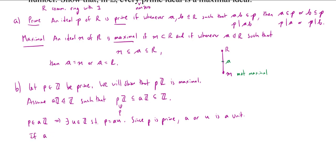Well, if A is a unit, then you're looking at the ideal generated by a unit, and that's the entire ring. So AZ is equal to Z.